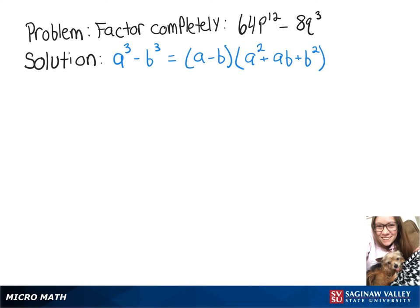We're going to factor 64p to the 12th minus 8q cubed. And to do that we're going to use this difference of cubes formula.